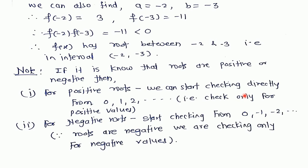So don't bother about the negative values. If it is given that our roots are negative, then start checking directly from 0, -1, -2, and do not bother about the positive values because our roots are negative only.